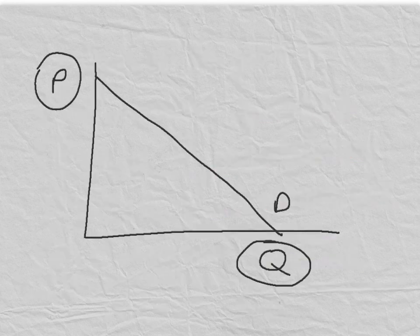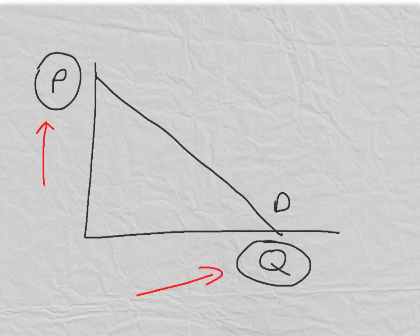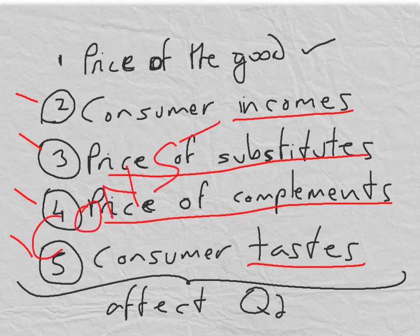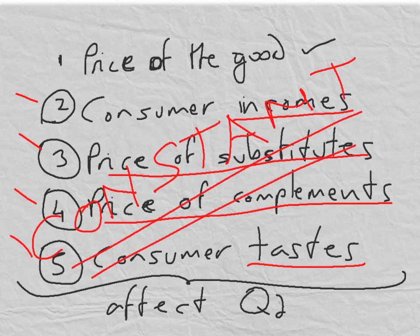When we draw the demand curve we only look at the price of the good itself against the quantity. All of the four other factors which we know affect the quantity are not shown on the demand curve. This is because we assume, when we draw the demand curve, that all of these factors are in fact constant — in other words, not changing. So when we draw the demand curve we are assuming that none of these factors change.